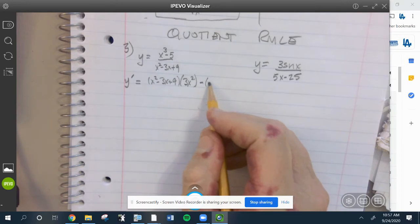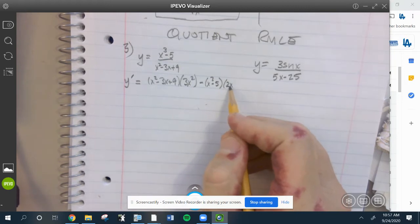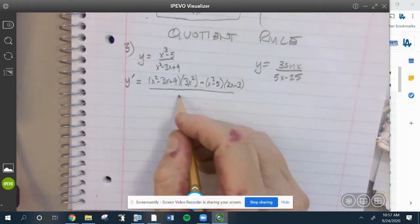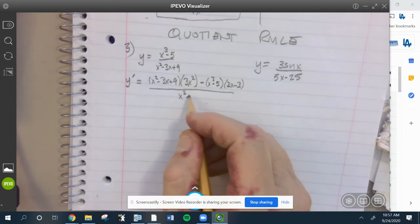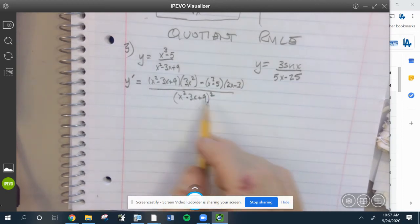All over the bottom squared. If you look at the bottom, it's all factored so don't do anything with it. The top we have two terms, so you want to factor out anything or combine everything.